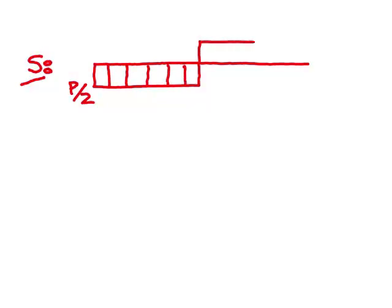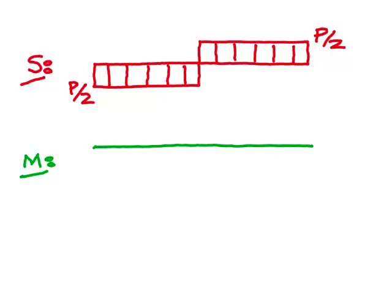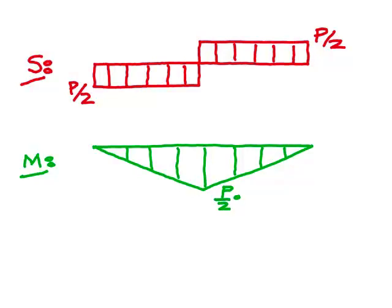For the bending moment diagram, convention is to draw a positive bending moment on the tension side of the structure. At the left-hand support the bending moment must be zero, and the same goes for the right-hand support. The bending moment varies linearly starting at zero, with a value of P upon 2 multiplied by x as x increases towards the centre span. On the right-hand side it also varies linearly back to zero. The result is a bending moment diagram with a maximum in the middle with a value of pL upon 4.